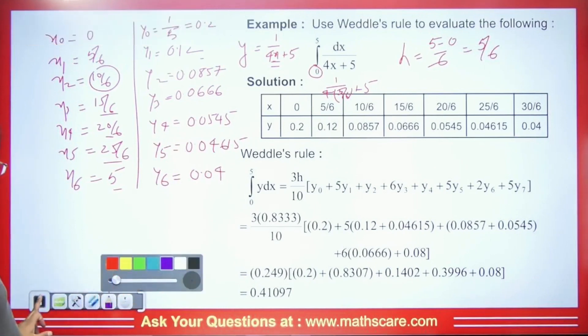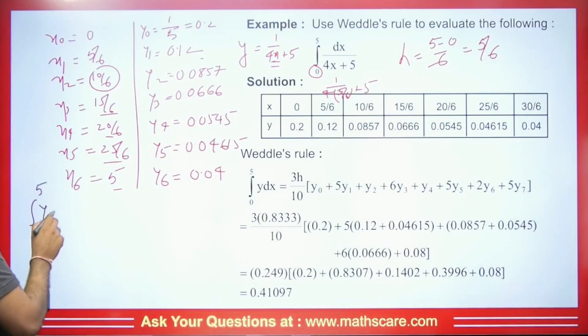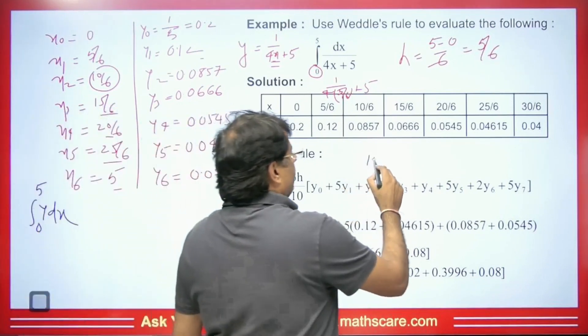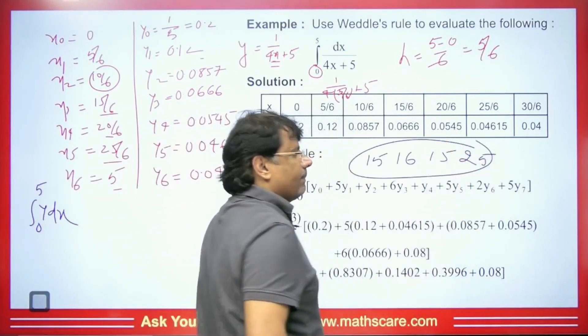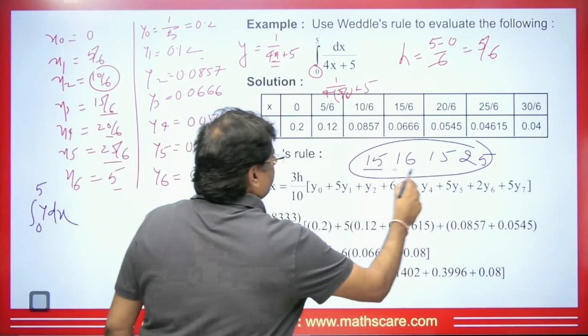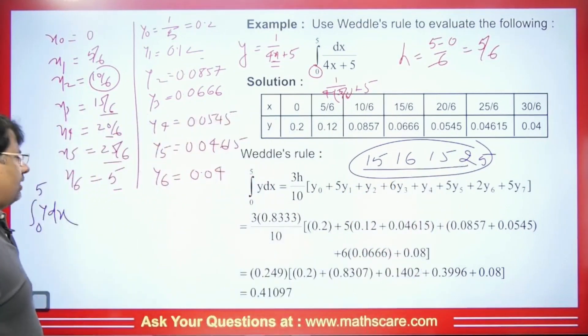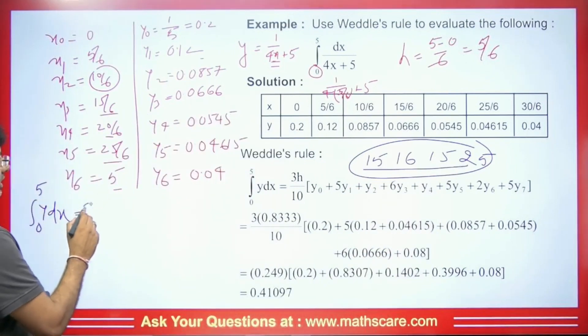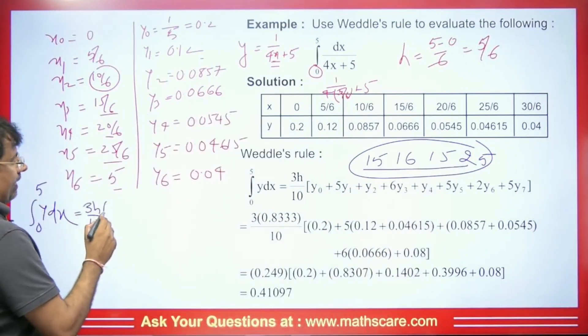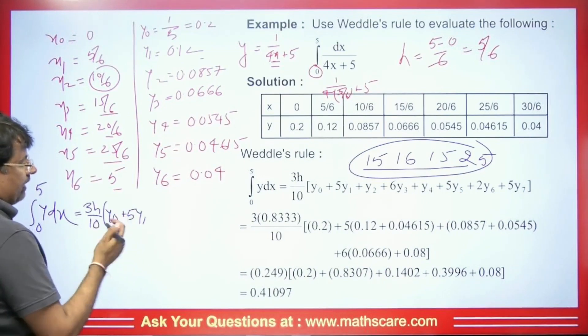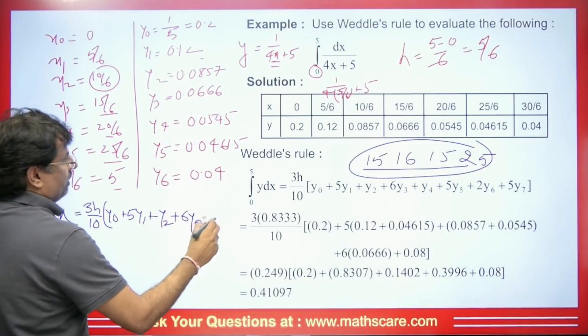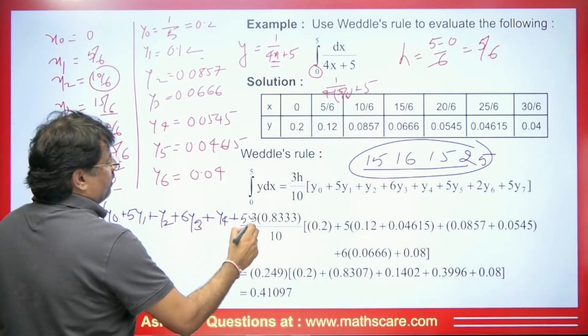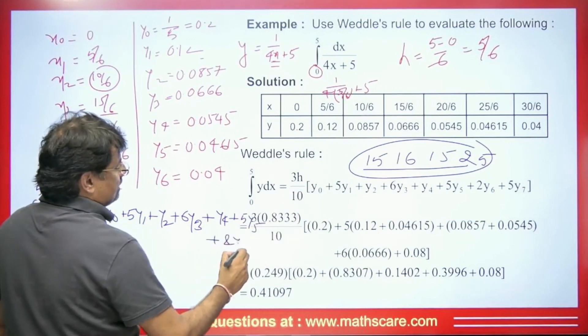Furthermore, I told you how to remember the Weddle's formula. The way to remember this is we have 0 to 5 and ∫y dx here. I told you to remember this, because this is important. This will be 15, 16, 15 and 25. So normally we have till 25, but here we have to write it till 6. You have to remember this much: 15, 16 and 2, while you can also remember 25. Therefore, you can remember the flow easily. This will be 3h/10[y₀ + 5y₁, whereas this will be 15]. Next here, we will have y₂ + 6y₃. And here we will have y₄ + 5y₅. Then finally, we will get 2y₆ as the value.